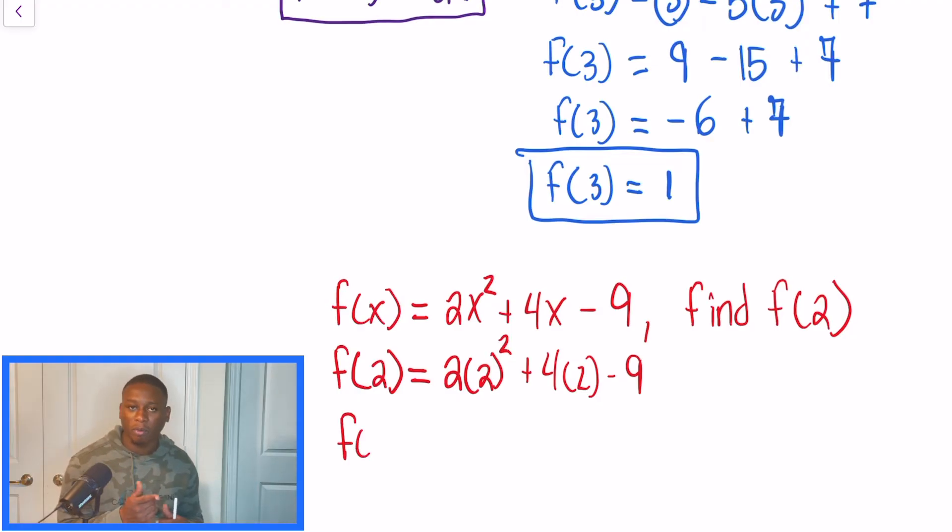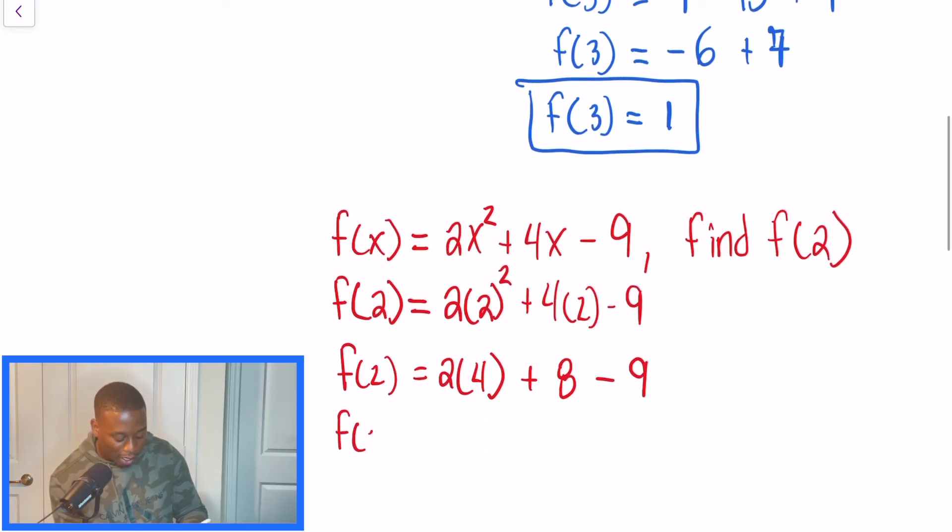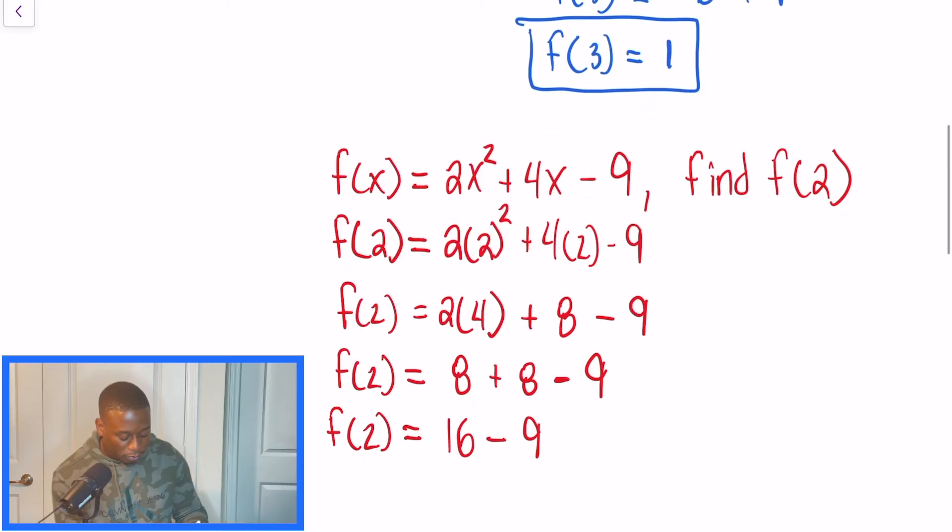And now we're going to use the order of operations and simplify. Just remember, with this very first step, parentheses, exponents is going to come before multiplication. Typically with functions, that's where the mistake happens, minor errors on following that order of operations process. So after we start evaluating, we're going to have 8 plus 8 minus 9. And we'll say that f of 2 is equal to 16 minus 9, which will give us an answer of 7.